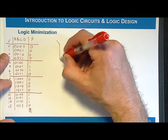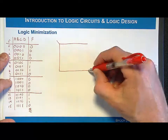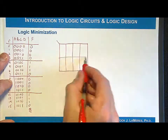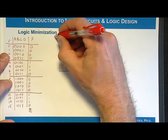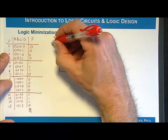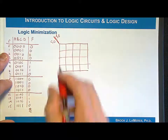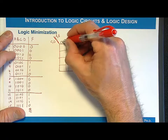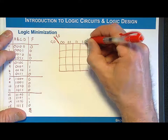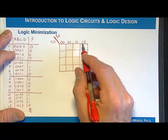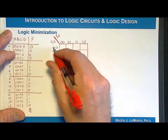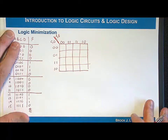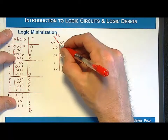For 16 cells, I'll have 4 columns and 4 rows. I list the input variables comma-delimited: A,B across the top and C,D on the side. Across the top, A,B follows the same ordering: 00, 01, 11, 10. Down the side, C,D also goes 00, 01, 11, 10 — because input codes can't differ by more than 1 between neighbors.